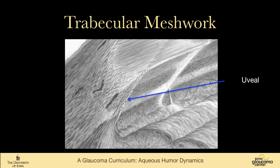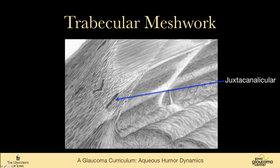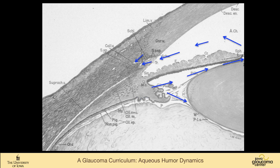The trabecular meshwork has three components. The uveal meshwork consists of fine strands going from the iris up to the cornea, fairly lacy. Then there's the corneoscleral meshwork that bridges between the scleral spur and the cornea. And then there's the juxtacanalicular tissue, which is more compact and forms the inner wall of Schlemm's canal — it is felt to be the area of most resistance to outflow. Fluid then goes into Schlemm's canal and from there into the aqueous veins and out into the venous system.